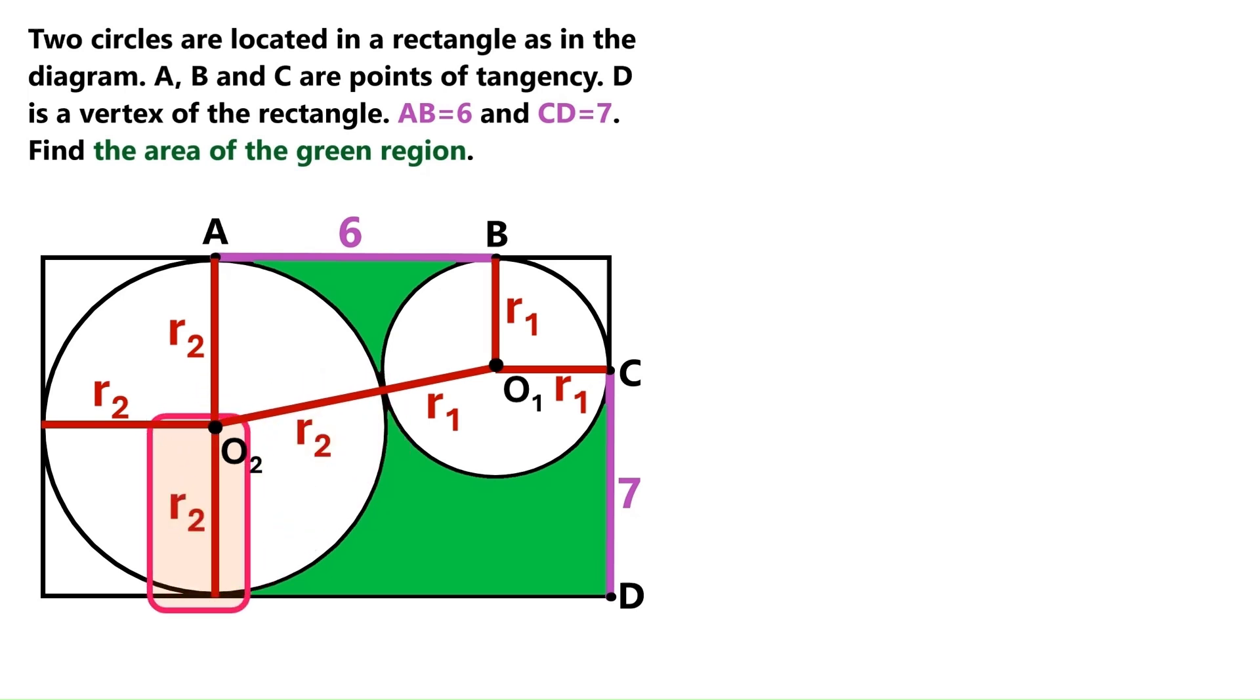This angle down here is 90 degrees, and this angle up here is 90 degrees too. We've now got this straight line here that equals 2R2, and we can project it to here, and it turns out this side of the big rectangle is 2R2.